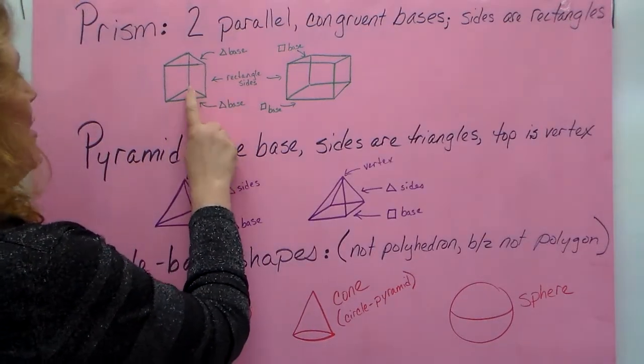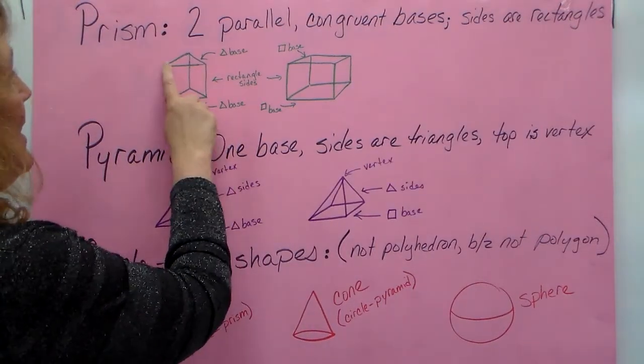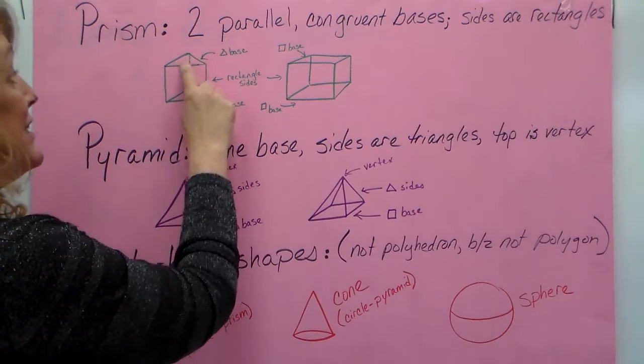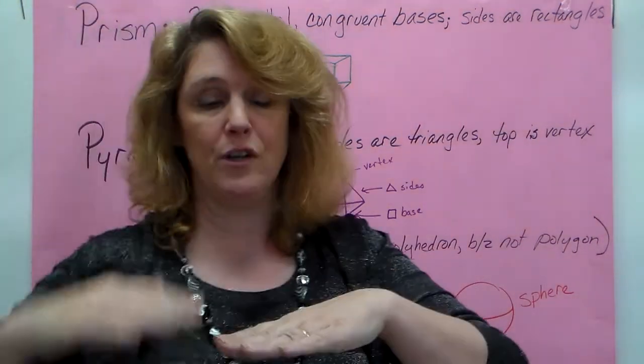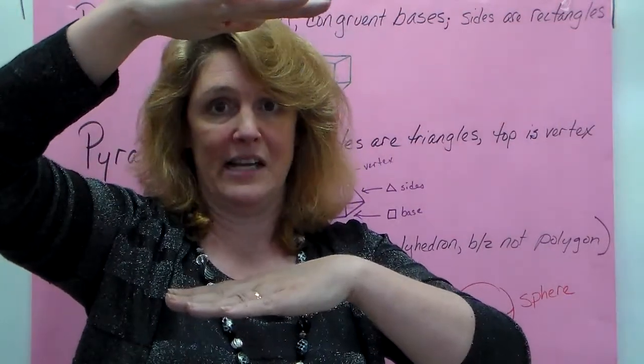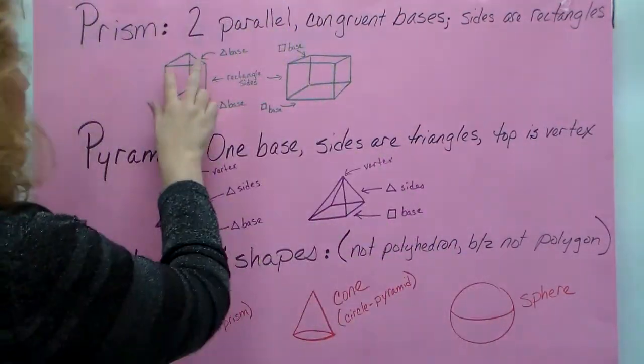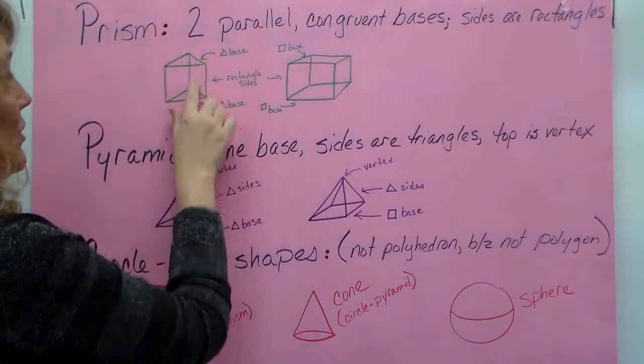All right. I've got a triangle base here and a triangle base here, and these are the same size triangles. They are congruent triangles. So you have a triangle on the bottom, a triangle on the top, and they're exactly the same size and shape. And what's connecting them are rectangles.